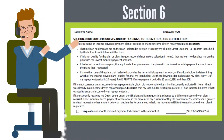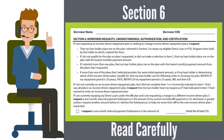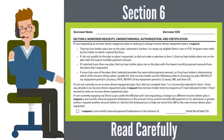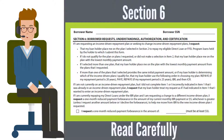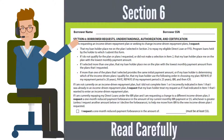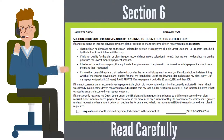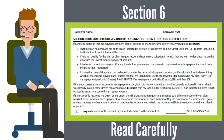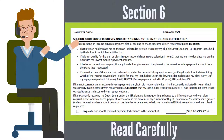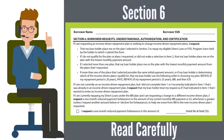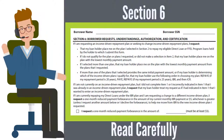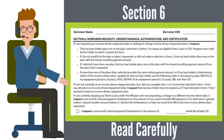Section 6: Read this section carefully to determine if the checkbox for the one-month reduced payment forbearance applies to you. Make your selection accordingly and follow through with any payments as indicated. Note, if you are requesting to change from the income-based repayment plan to a different income-driven repayment plan, the forbearance and payment is required.